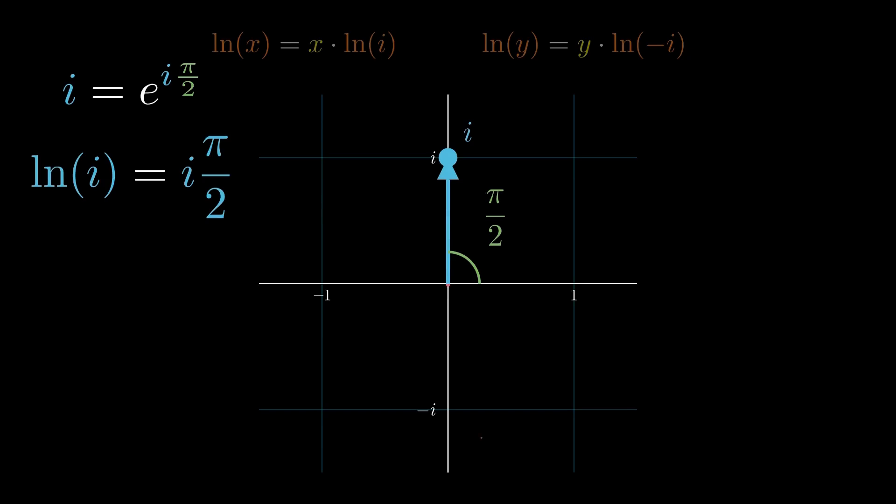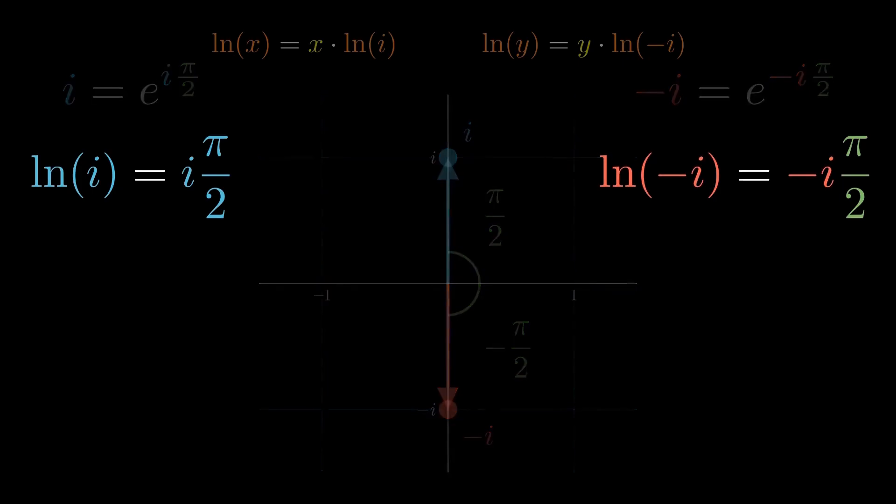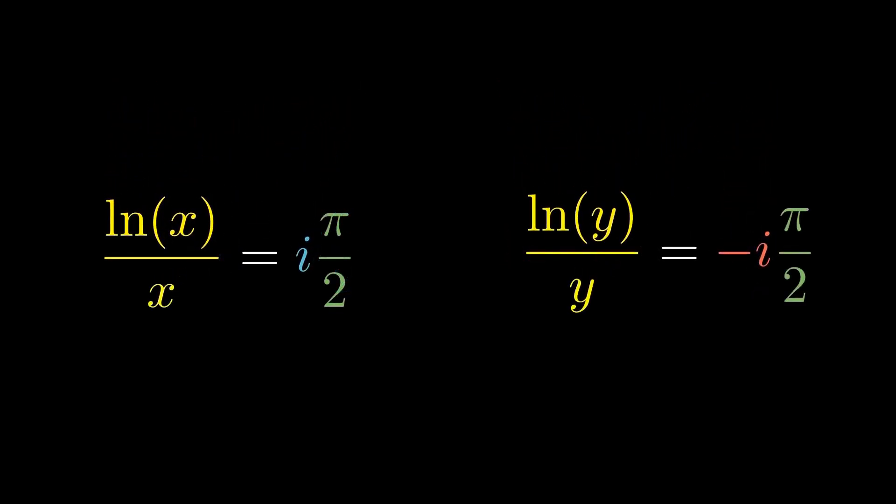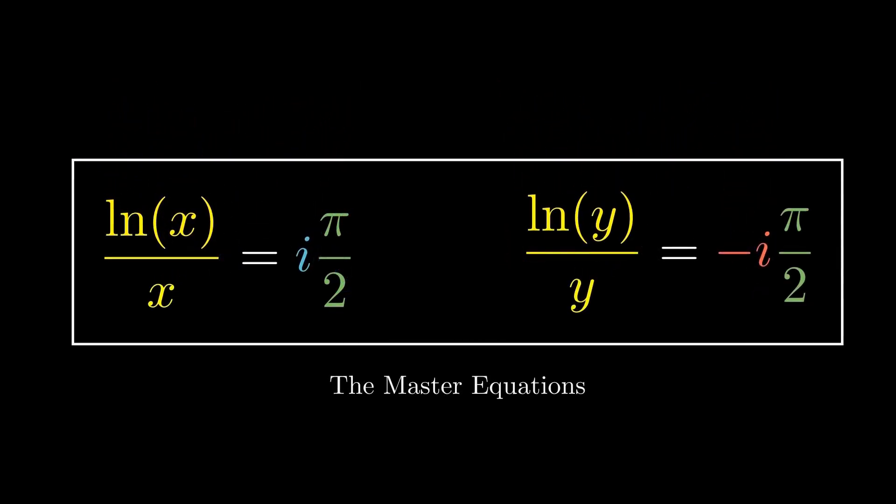Repeating the same idea for minus i, the angle flips sign. So the natural log of minus i is minus i times pi over 2. Substituting these results, we arrive at two master equations. And from here, the solutions will finally emerge.